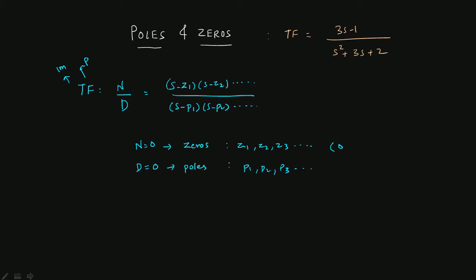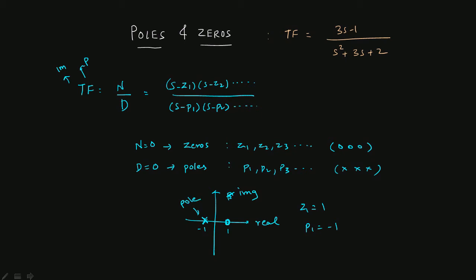The representation for zeros uses a circle and for poles uses a cross. Suppose we have a graph where the x-axis is the real part and the y-axis is the imaginary part. Let's say z1 is 1 and p1 is minus 1. At position 1 you place a circle to indicate the zero, and at minus 1 you place a cross to indicate the pole.